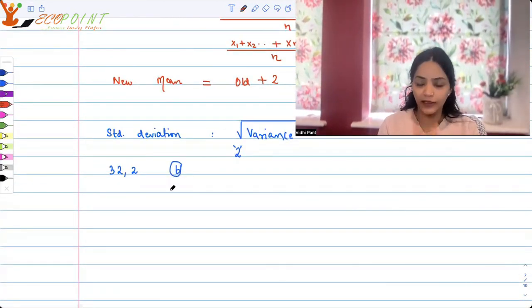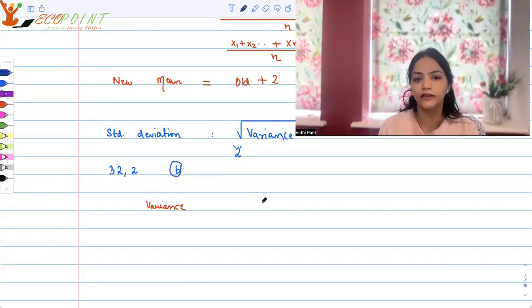In this question let me take the advantage and probably tell you why this happens. So let's take up variance. Why is it independent of the change in origin? So the reason is variance basically is